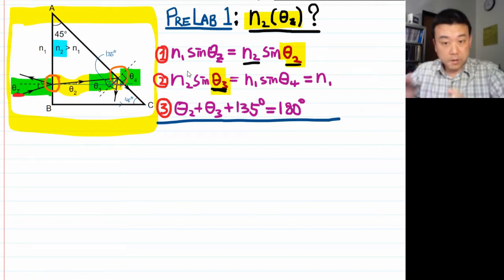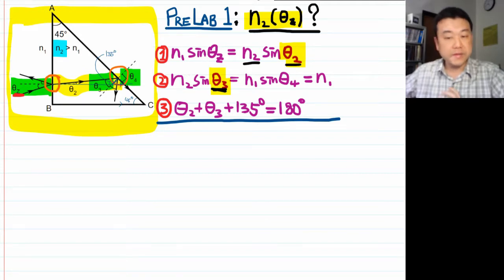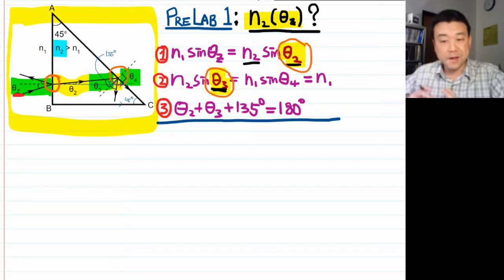So now that we compiled all the information, the rest of this question is really that algebra and trigonometry practice. Now, I want to be deliberate here. What I want in the very end is N2. These Theta2 and Theta3 are intermediate unknowns that I'm not really interested in. So my goal is going to be to eliminate them.